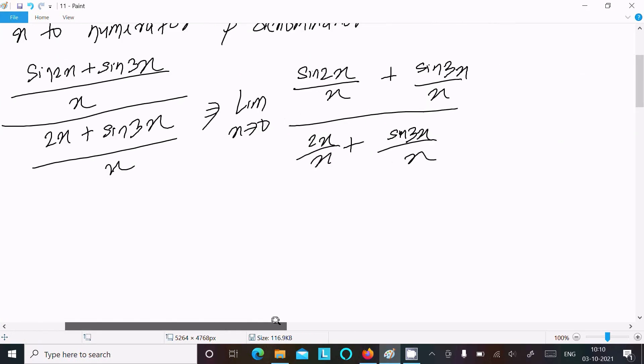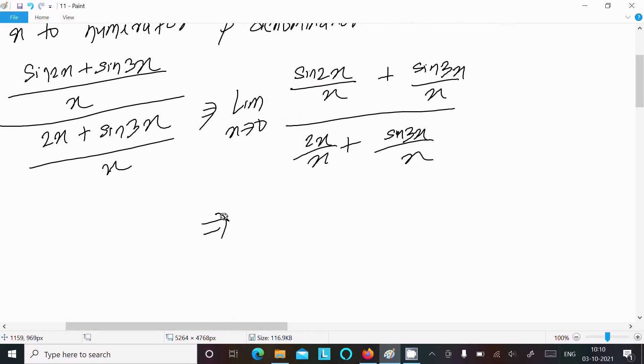Now thereafter, so here we know the formula: limit x tends to 0 of sin x by x, that is equal to 1. If you write here 2x by 2x, 2x tends to 0, then that also equals 1. So here, I require 2, so I'm multiplying with 2 here and here.